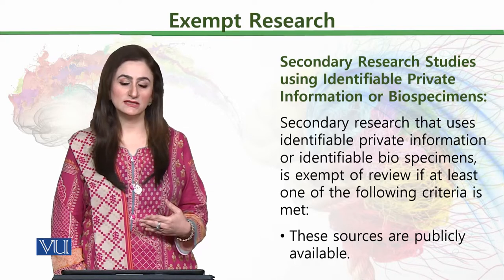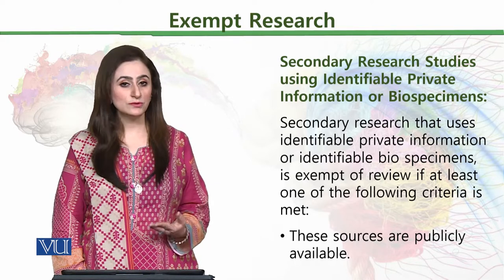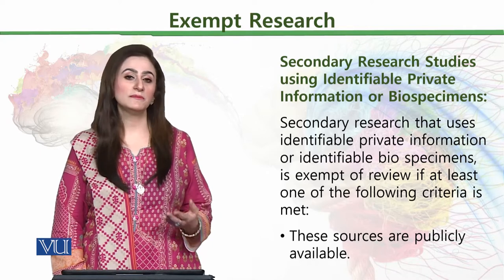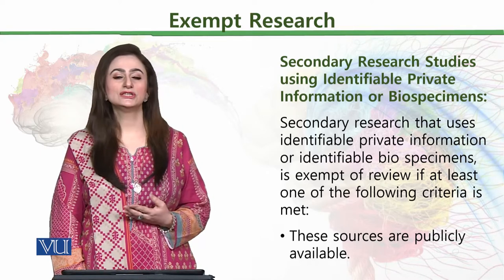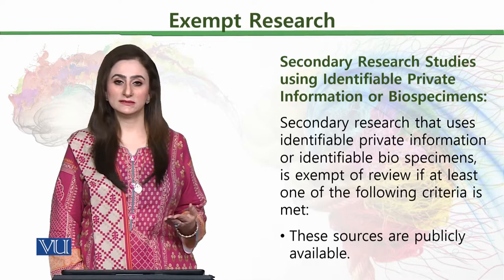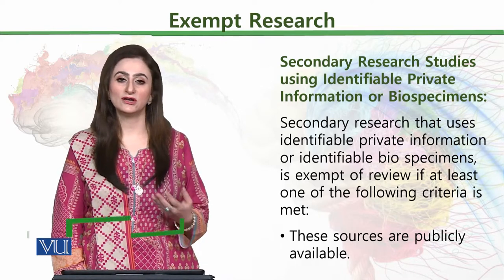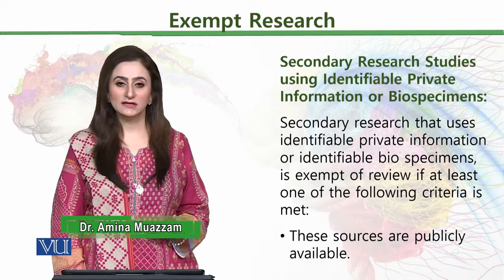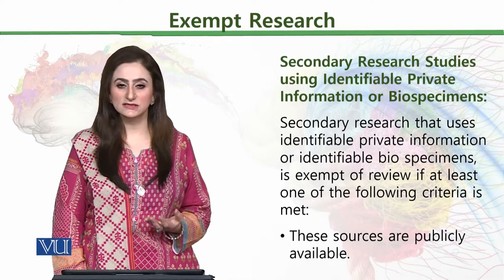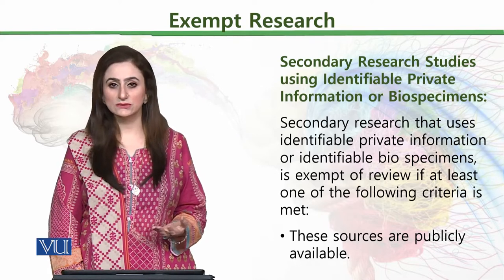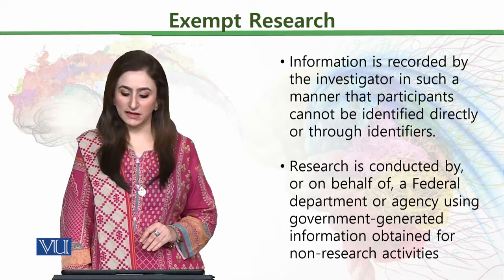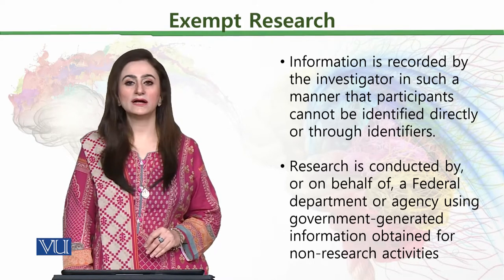In certain situations, secondary level exempt research can be done if we have certain following points to meet the criteria. The first one is that these sources are publicly available. If the researches are publicly available — for example, regarding human participants' opinion survey on elections — we have data of 3000 participants available indicating which party they are possibly going to vote for in the upcoming election. This is the available data source; it is called a secondary research study and it is also exempt research. Information is then regarded by the investigator in such a manner that participants cannot be identified directly or through identifiers.